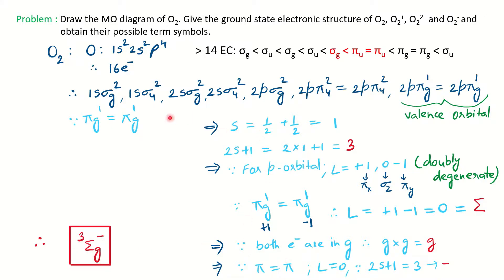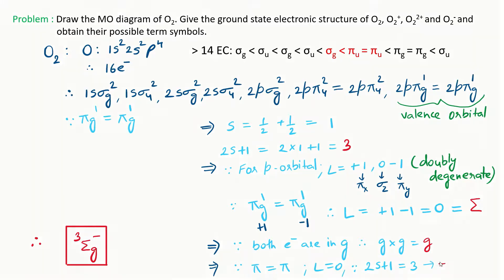To summarize the steps: first, write the electronic configuration correctly to find the valence orbital. Then calculate multiplicity by finding the S value. Second, find the L value to determine the symbol. Third, determine the symmetry g or u. If the symbol is Σ, decide whether it comes from a sigma or pi orbital to assign plus or minus. This is the procedure for oxygen.